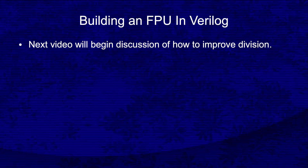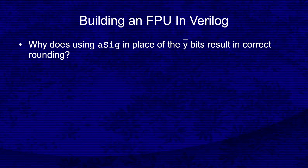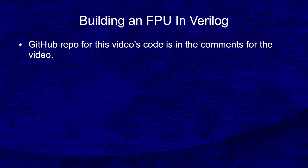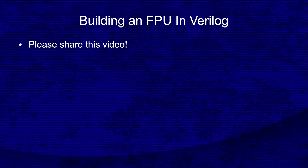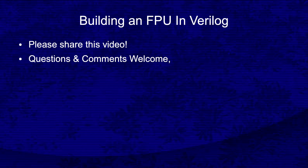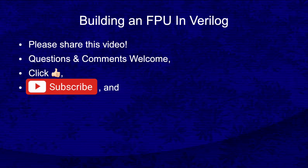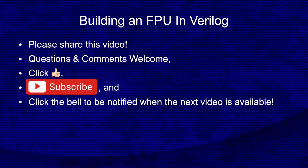Before going, I'll leave you with a study question for next time: why does using asig in place of computing the y-bar bits result in correct rounding? The comment section gives the location of the GitHub repository for the code described in this video. Please share this video with friends and colleagues who might have an interest in this series. Questions and comments are welcome in the comment section. If you found this video useful, please click like, subscribe to the channel, and click the bell to be notified when new videos are available.